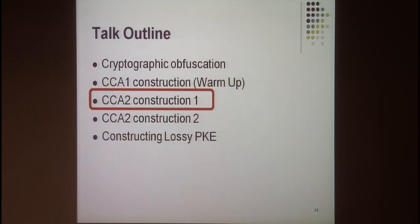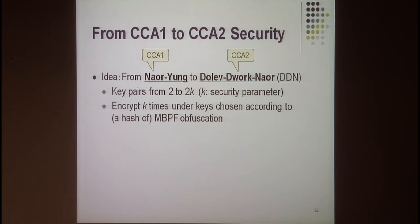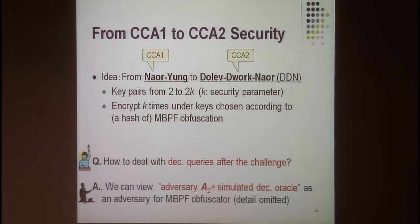I go on to the CCA2 construction. The idea is actually very simple. In the CCA1 case, we used a Naor-Yung-like idea, so we extend it to a Dolev-Dwork-Naor-like construction — the first construction of CCA2-secure encryption from CPA encryption and NIZK. We make the key pairs from two pairs into 2K pairs, where K is the security parameter, encrypt the point α K times, and the session key is chosen from the hash of the obfuscated MBPF program. In the case of CCA2 security, we must deal with decryption queries made by the second-stage adversary, but we can treat the second-stage adversary together with the simulated decryption oracle as one algorithm attacking the MBPF obfuscator, and the security argument works.